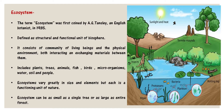Ecosystems vary in size; each has a functioning unit of nature which can be as small as a single tree or as large as an entire forest. For example, a pond ecosystem consists of protozoa, bacteria, sunlight, heat, plankton, rotting log, fungi, insects, algae, and termite mounds. You can see all these in pictures.